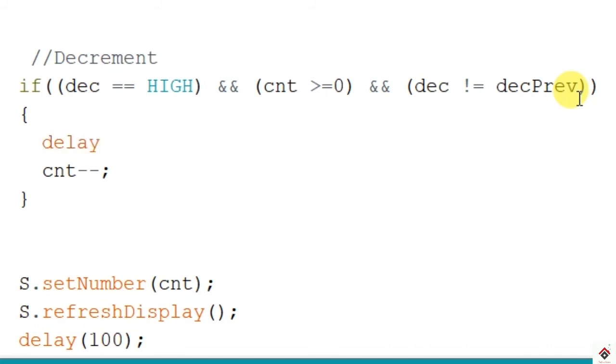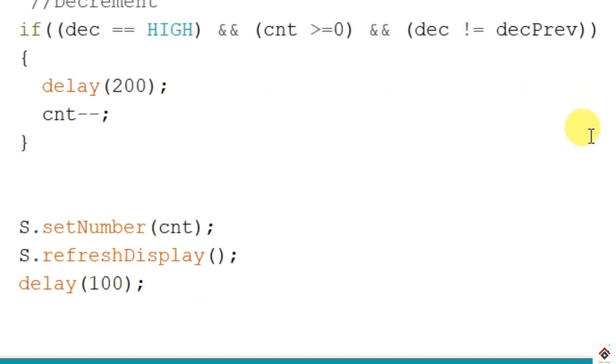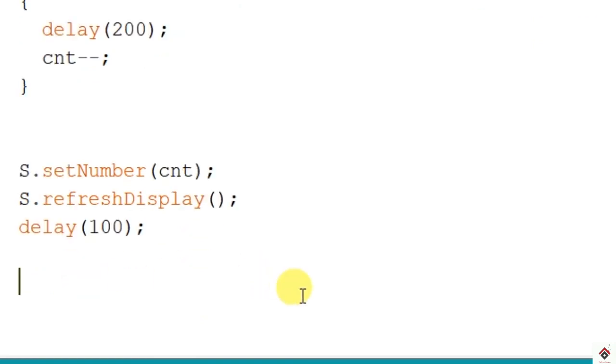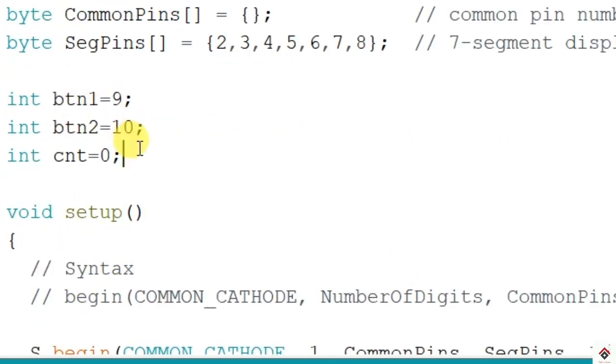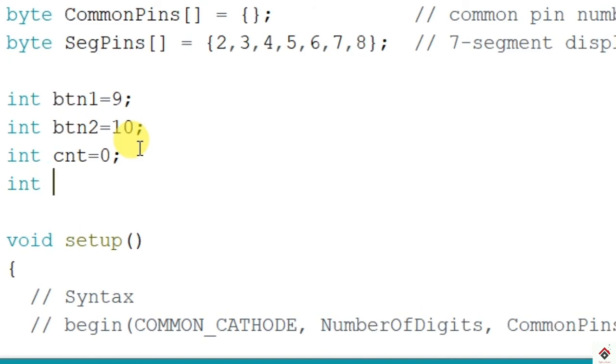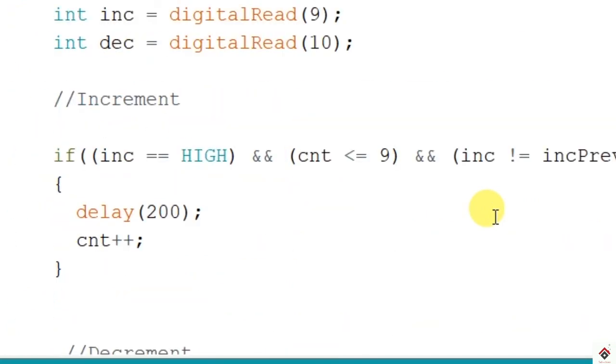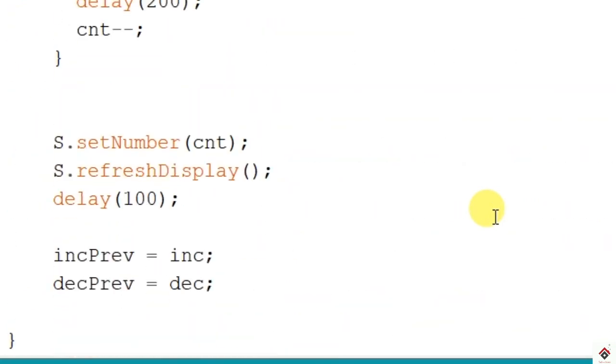Also in the decrement loop, we have to store the previous values at the end of every cycle. We will also declare both of these variables at the declaration.